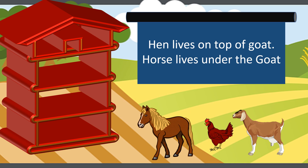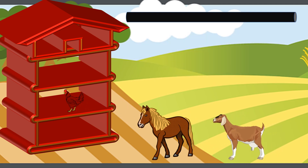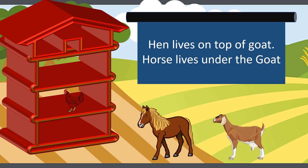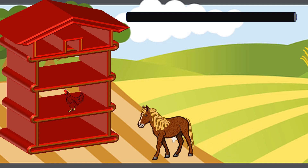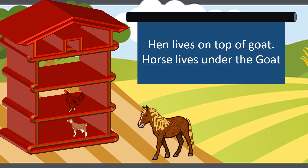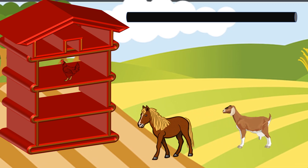Let's start placing the animals. As per the sentence, I have placed hen in the middle of the house. The first sentence says hen lives on top of goat, so let me place the goat now. As per the first sentence, hen lives on top of goat — we have met this criteria. Now let's check the second sentence: horse lives under the goat. But there is no place for the horse.